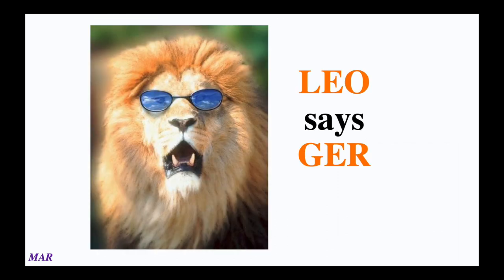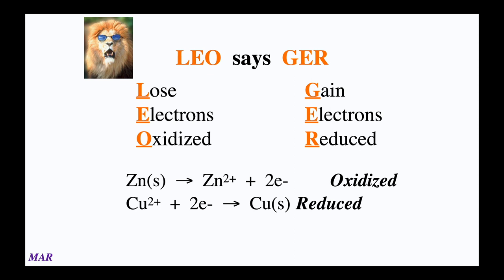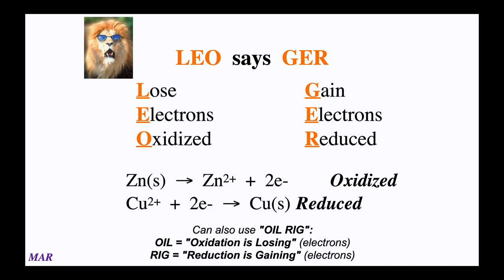I prefer using Leo the Lion. Leo says GRR — it's an acronym. LEO stands for 'Lose Electrons, Oxidized.' GRR stands for 'Gain electrons, Reduced.' For example, zinc metal losing two electrons is being oxidized, and copper two plus gaining electrons to make copper metal is being reduced. You can also use OIL RIG — 'Oxidation Is Losing, Reduction Is Gaining.' Either way is fine.